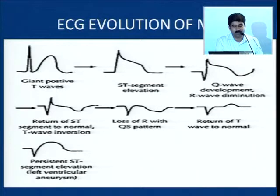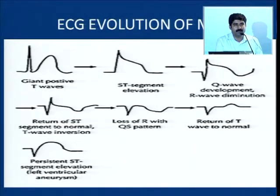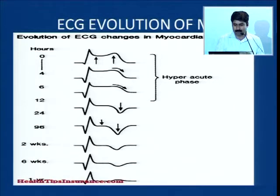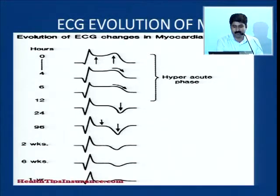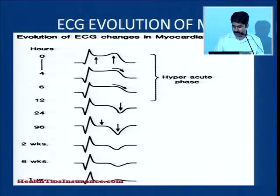The T-inversion may become normalized with only the QS wave remaining. Sometimes, if perfusion is not good or the territory is fully infarcted, negative remodeling may cause persistent ST elevation which can lead to LV aneurysm. As far as timing: at 4 hours there is ST shift; at 6 hours ST and Q; at 12 to 24 hours ST settles down, T inverts, Q is present; at 96 hours ST is nearly normal; at 2 weeks Q is there; at 6 weeks T is inverted and becomes flattened.